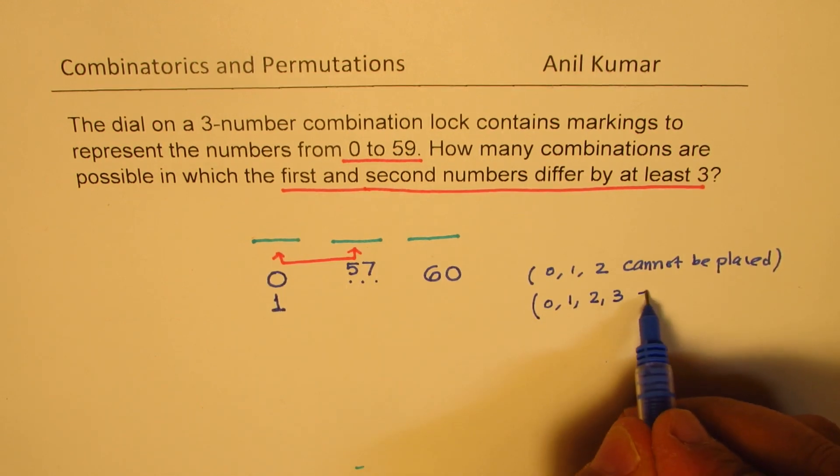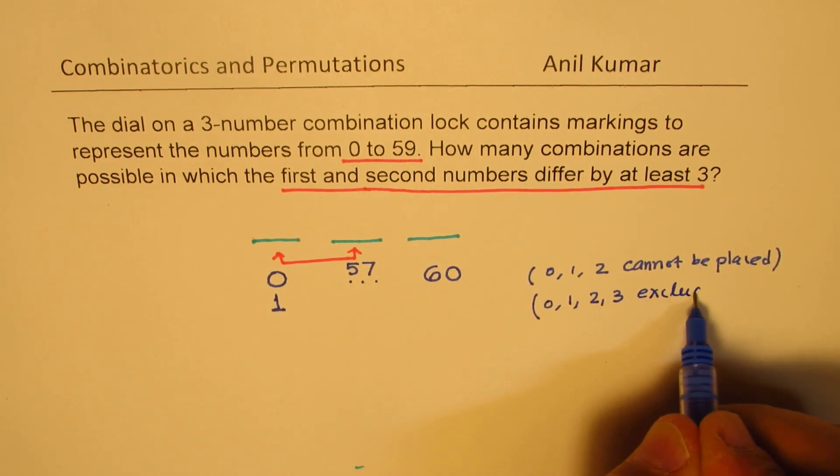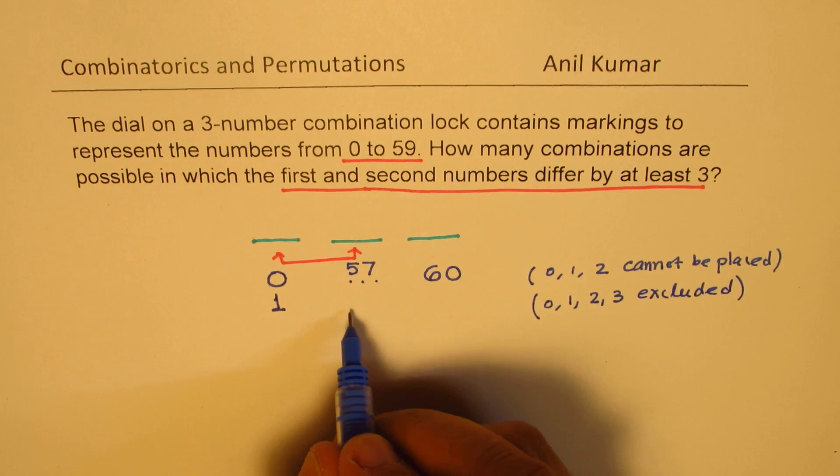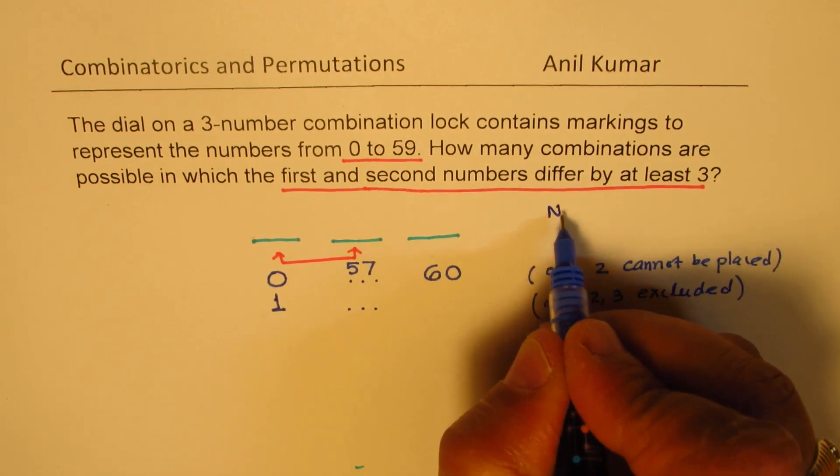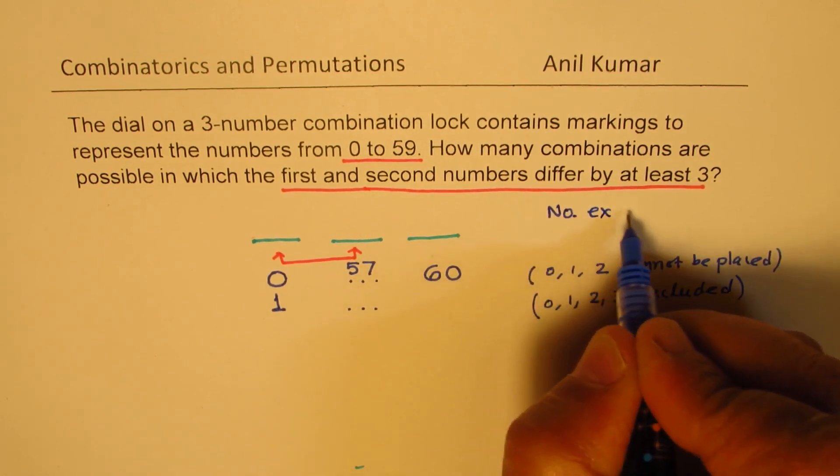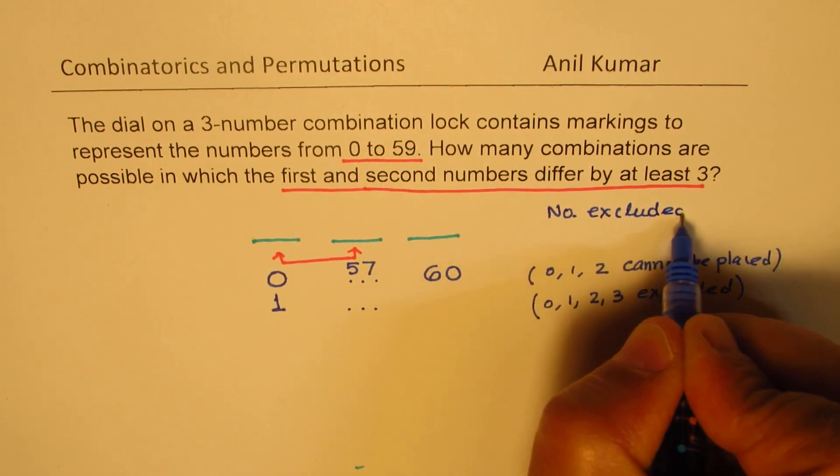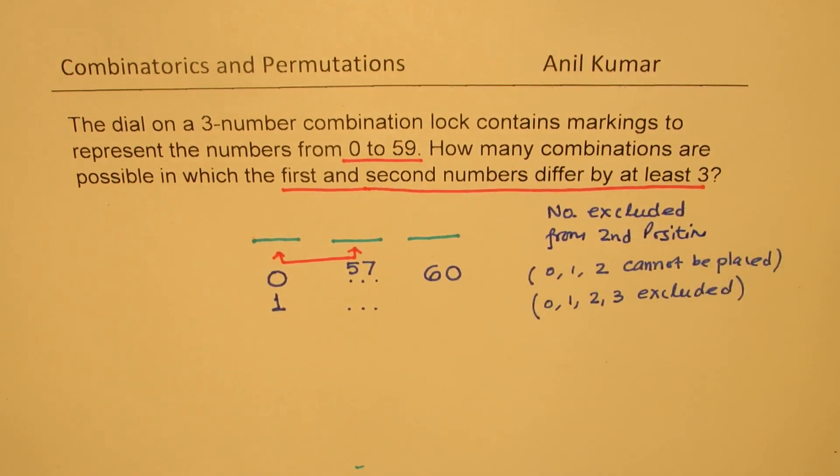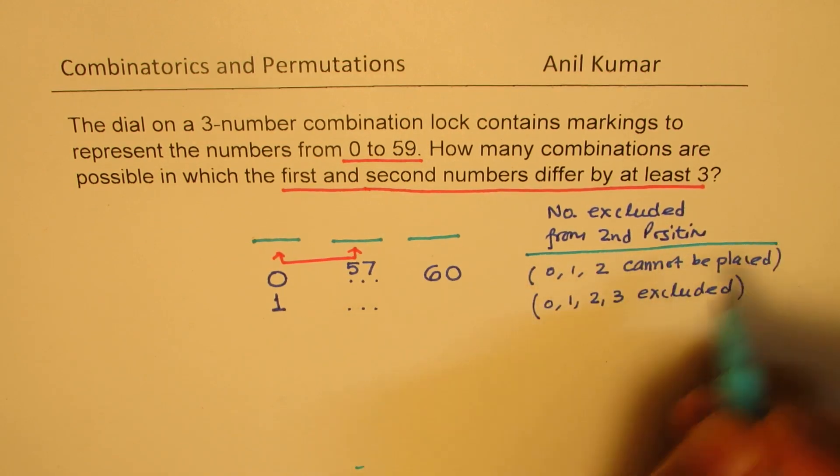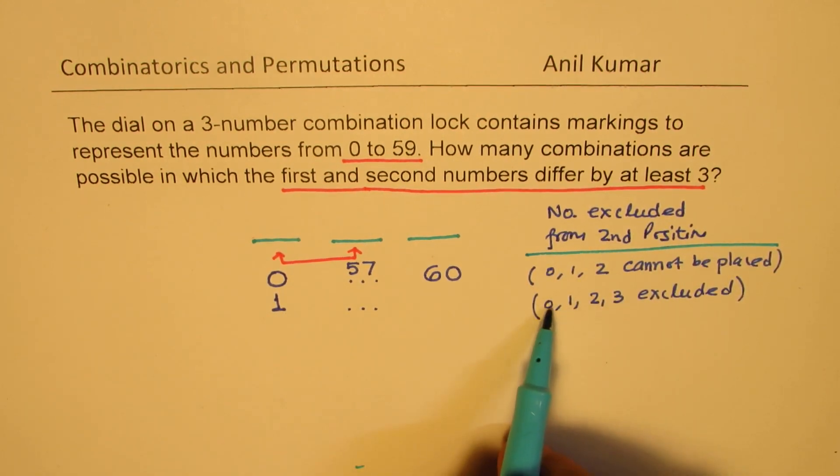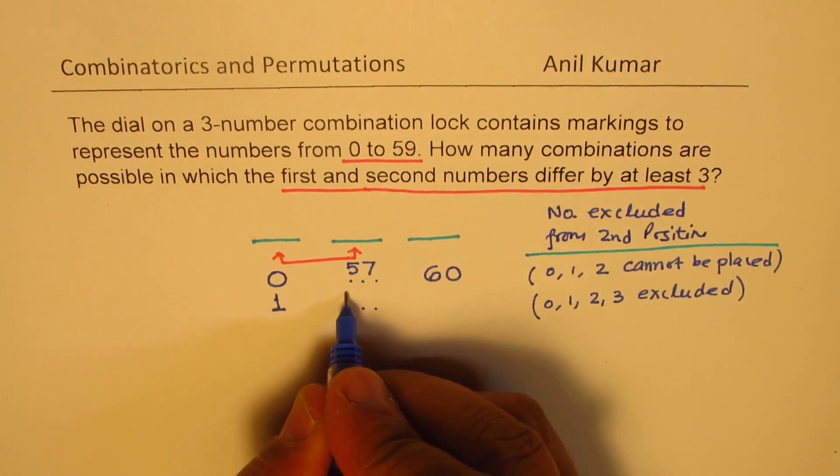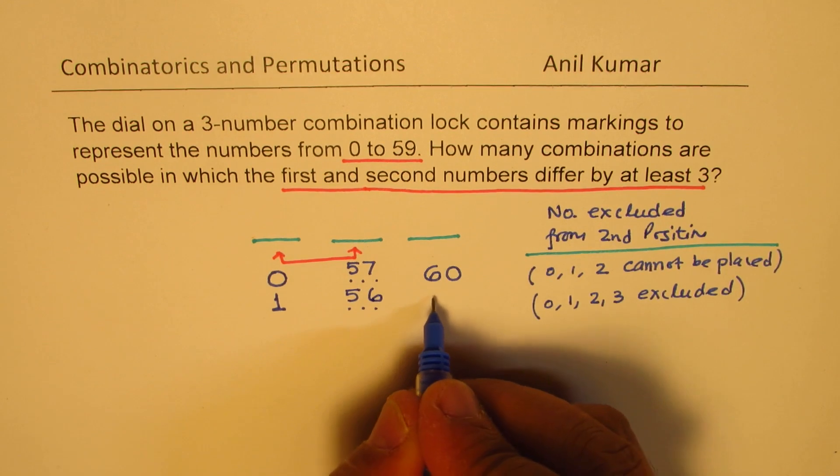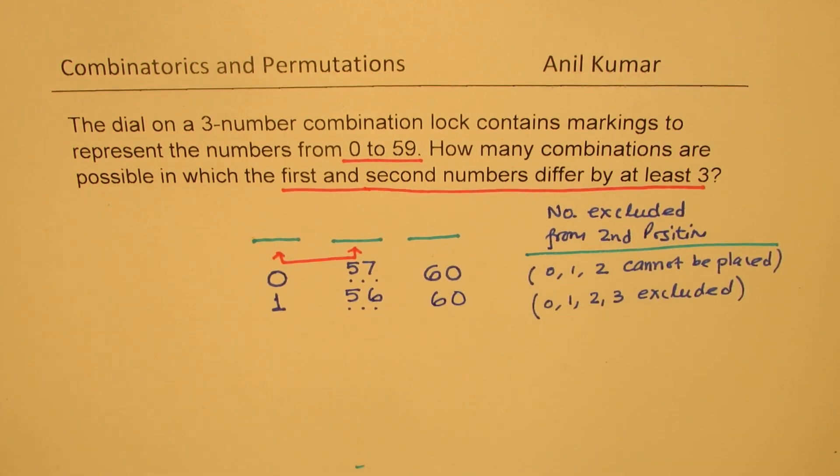These are the four numbers which are excluded from the second position. We are writing here, numbers excluded from second position. So what we notice here is that now when I start with 1, I have to exclude 4 numbers out of 60. That means I can place 56 numbers. And on the last position, I can place all 60, no problems.